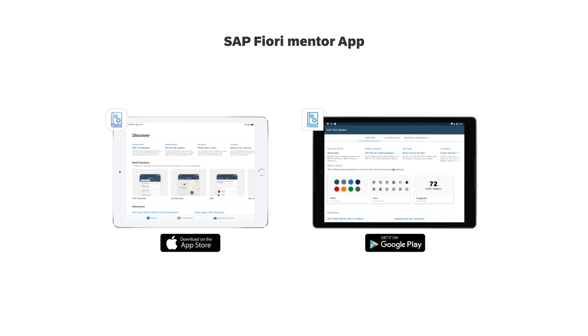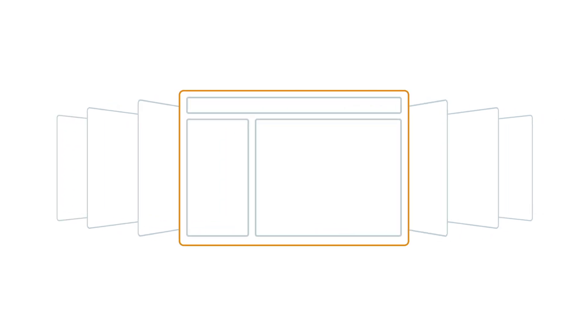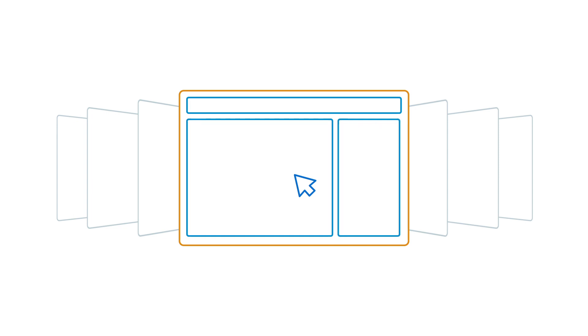The app is free and available for download on both iOS and Android. After you have determined which controls work best for you, using our stencils is a breeze. They contain draggable components as well as color and font styles that can be applied to your designs. To help with a clean handoff from design to development, we also incorporated the SDK API and class naming conventions into our stencils.